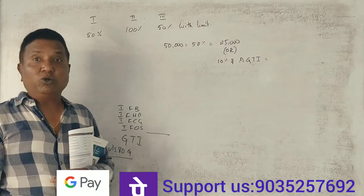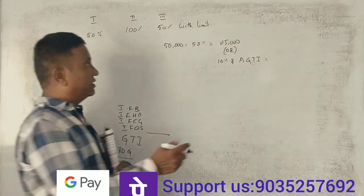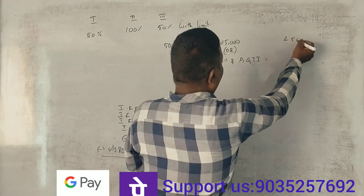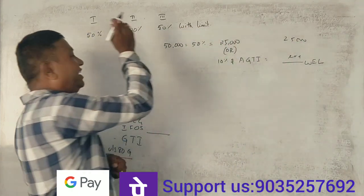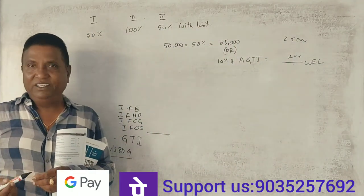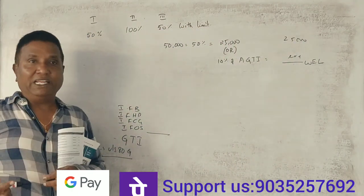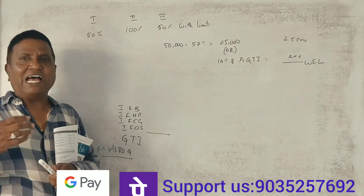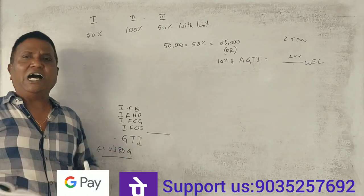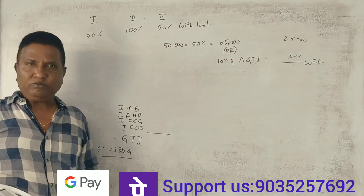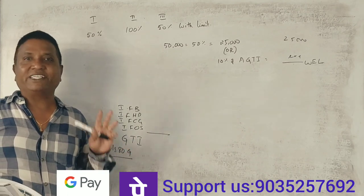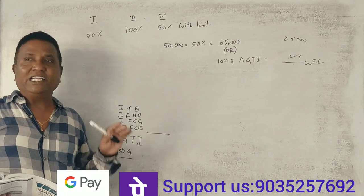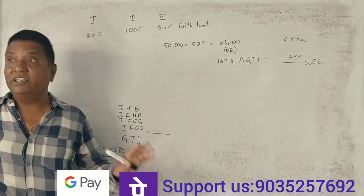10% of adjusted gross total income. Compare 25,000 with 10% of adjusted gross total income, whichever is lower. So what institutions qualify? Approved and registered institutions under Section 80G qualify.